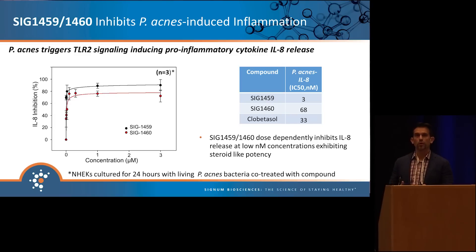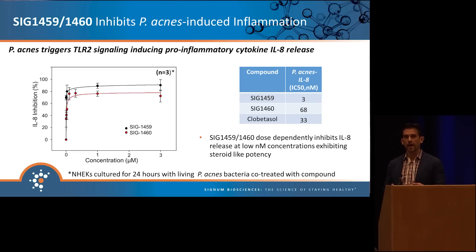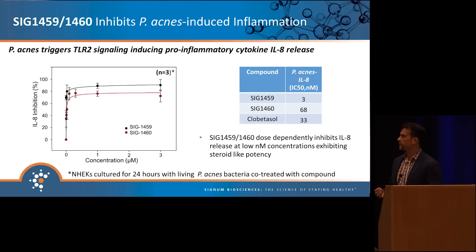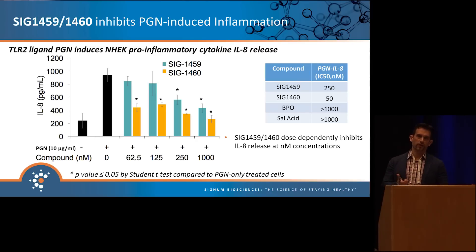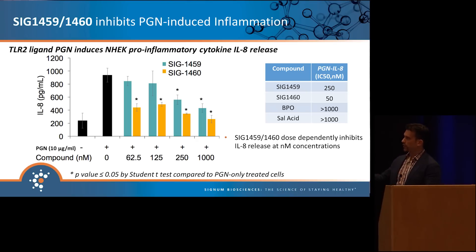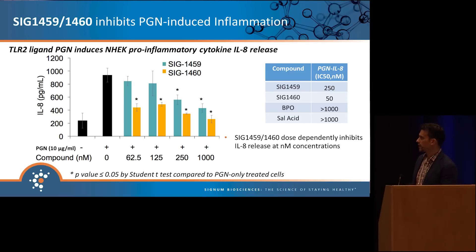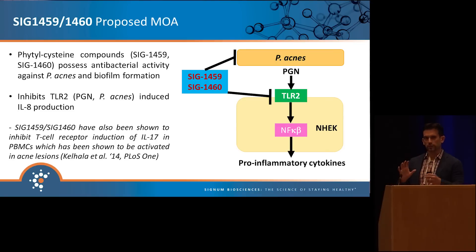Building upon the antimicrobial activity, SIG1459 and SIG1460 were also shown to inhibit P. acnes-induced inflammation. When we treat NHEKs with live P. acnes — which triggers TLR2 signaling and an overproduction of IL-1α — we see a nice dose-dependent inhibition of IL-1α at really low IC50 values in the low nanomolar range, on the order of steroid-like potency. We also used the specific TLR2 ligand peptidoglycan (PGN) to treat NHEKs, and again SIG1459 and SIG1460 dose-dependently inhibit IL-1α release at nanomolar IC50 values.